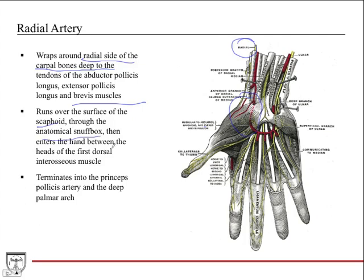Then it enters the hand between the heads of the first dorsal interosseous muscle, deep in here. It terminates into two arteries: the princeps pollicis artery, and then really this is an arterial network, the deep palmar arch. So there are two palmar arches, and we'll talk about the deep and superficial arch.